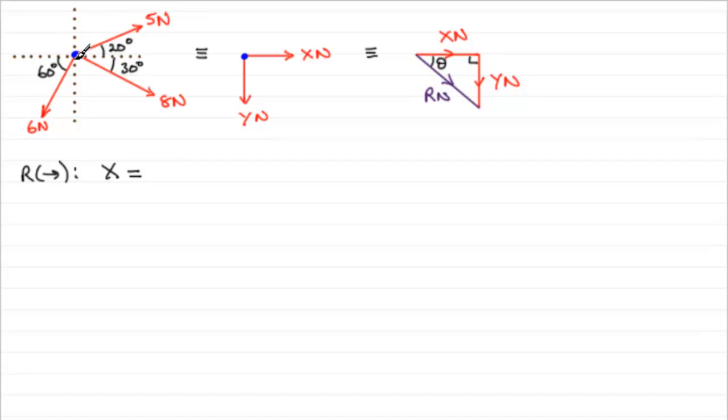All that we're interested in is the component of the five newtons which pushes towards the right. Well it would include the angle here of 20 degrees and we've said before that if you've got a force that includes an angle it's cosine. So we could say five cosine 20 would be that component.